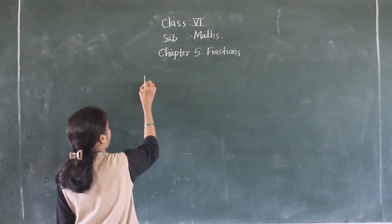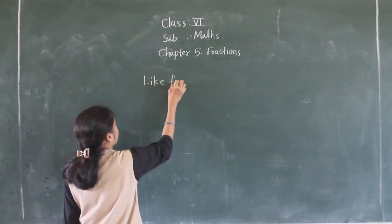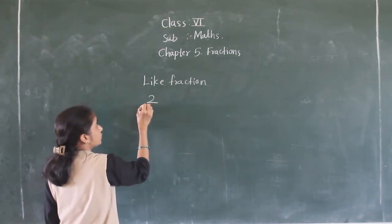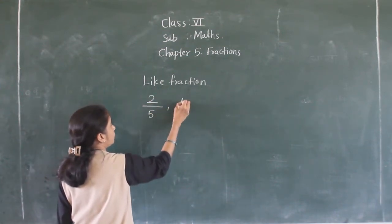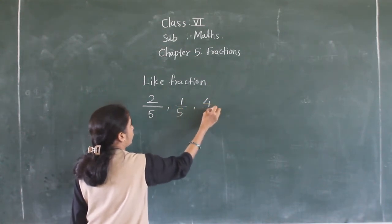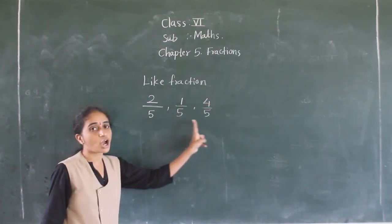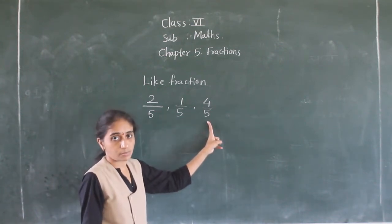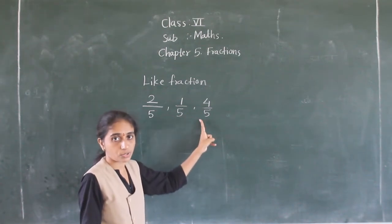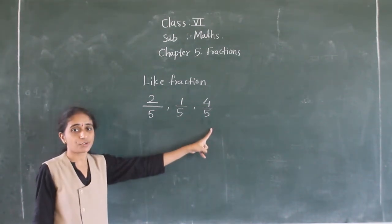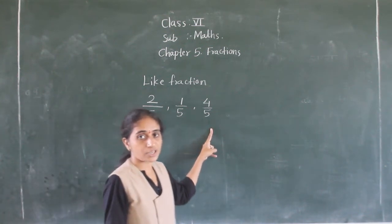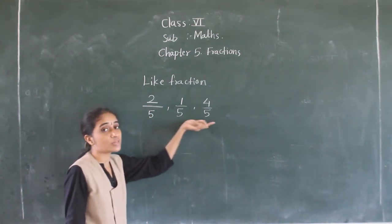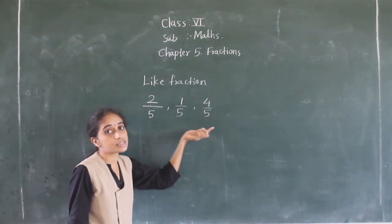See now an example of like fractions. If you can see: 2 upon 5, 1 upon 5, 4 upon 5. See, their denominators are the same. Because the denominator is the same for each fraction, these fractions are called like fractions.